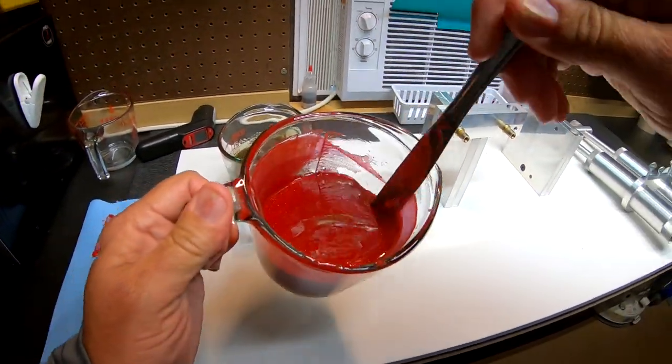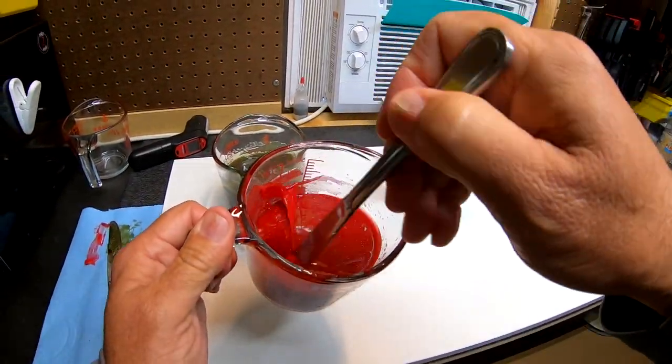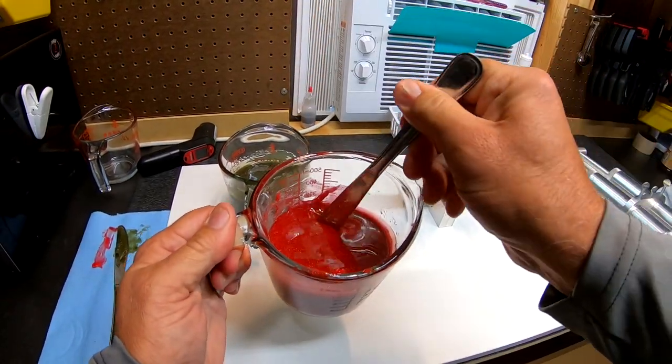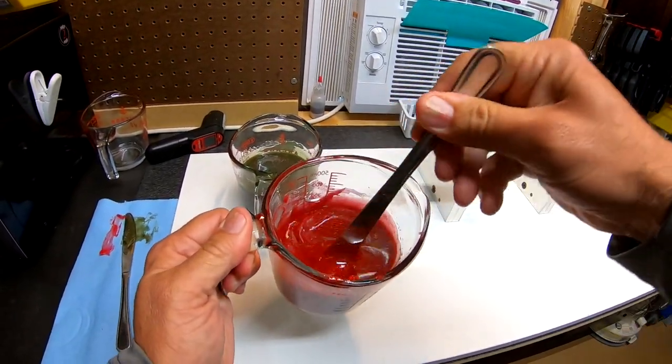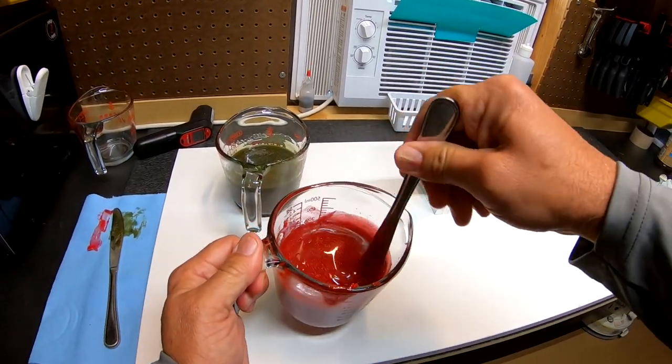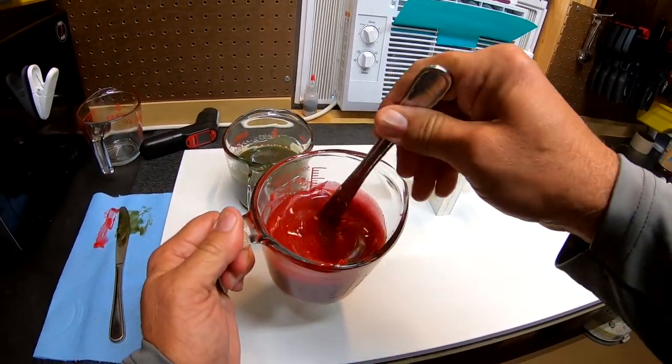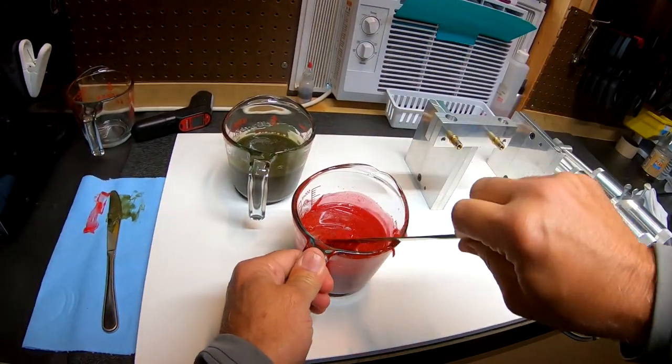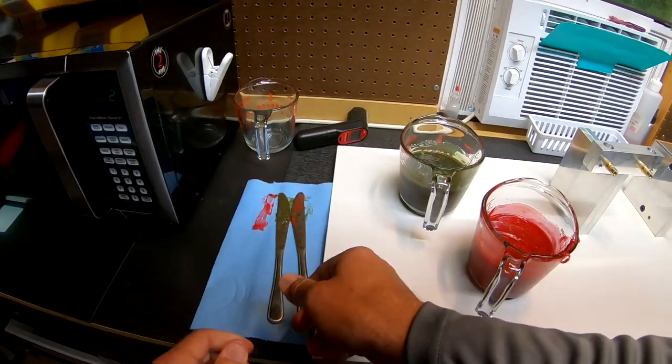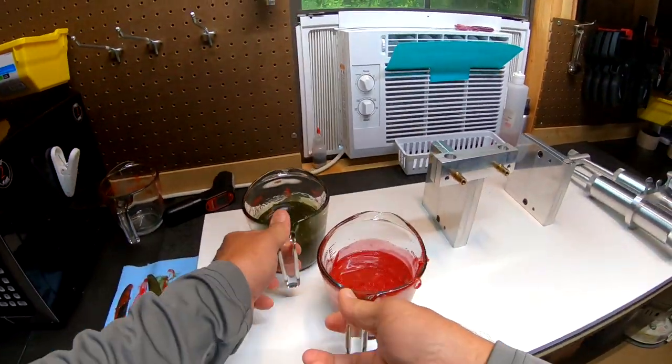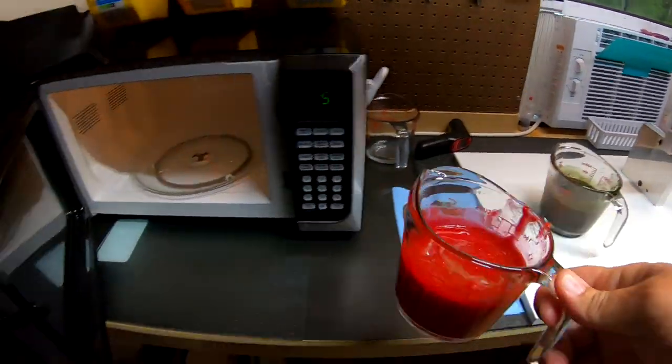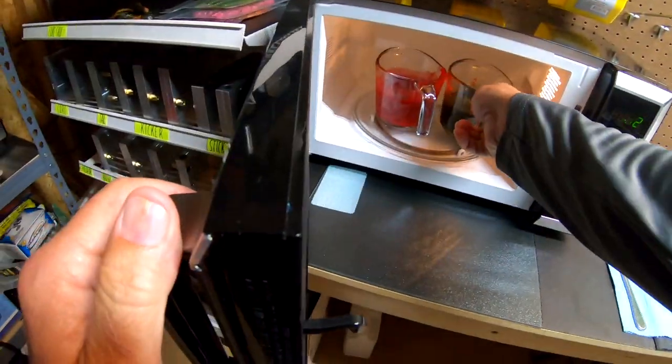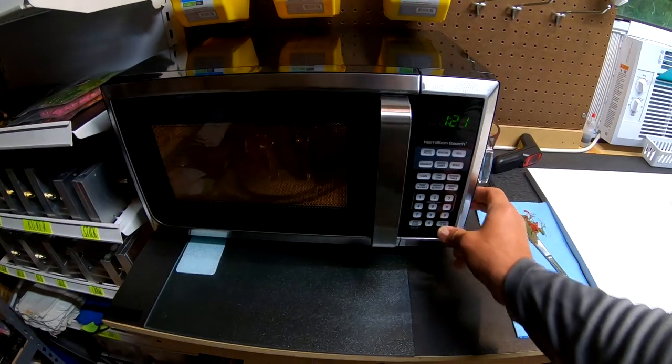Now we've got our red portion of this mix just out of the degassing chamber. Needs a little bit more time back in the microwave to get it up to give or take about 350 degrees. So get these both back in the microwave to kind of get them on the same temperature level. And we'll be right back.